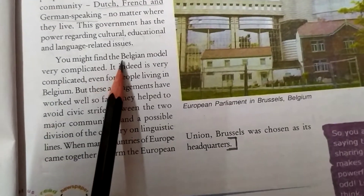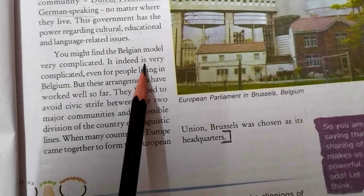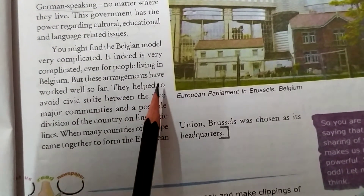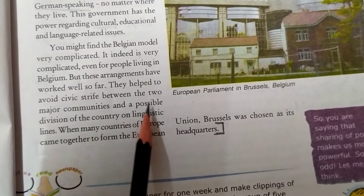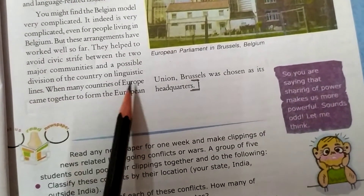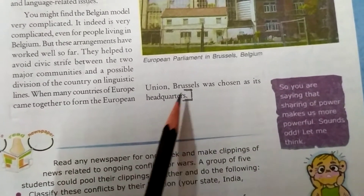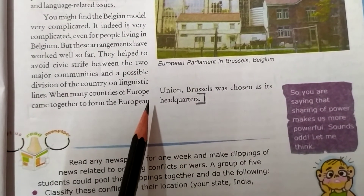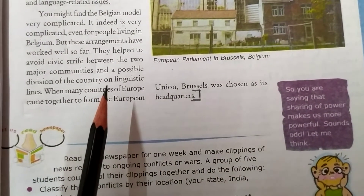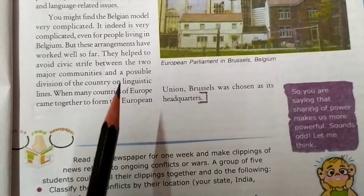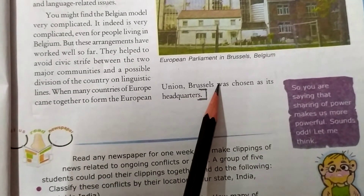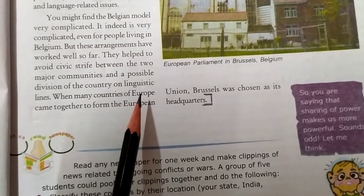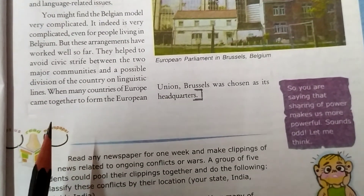You might find the Belgian model very complicated — it is indeed, even for people living in Belgium — but these arrangements have worked well so far. They helped avoid civic strife between the two major communities and a possible division of the country on linguistic lines. When many countries of Europe came together to form the European Union, Brussels was chosen as its headquarters, so that if they required any suggestion or guidance in making their constitution, Brussels could help them out. This is all about accommodation in Belgium.